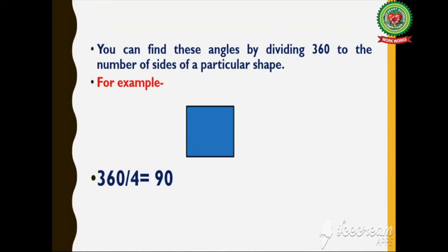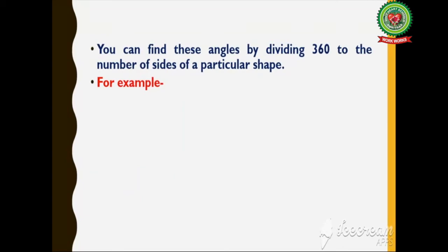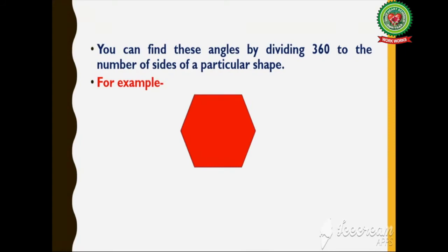Let's take one more example. A hexagon has six sides, so 360 divided by 6 equals 60 degrees. So in this way you can find angles by dividing 360 by the number of sides of a particular shape.